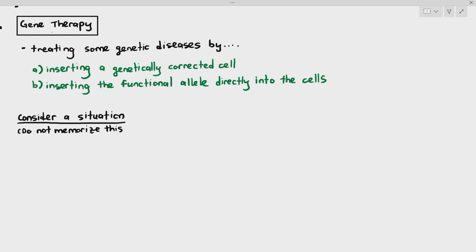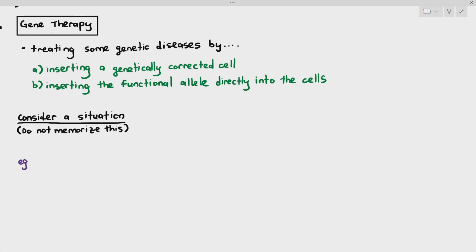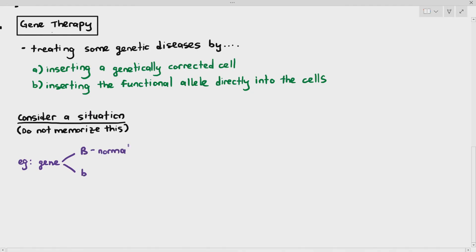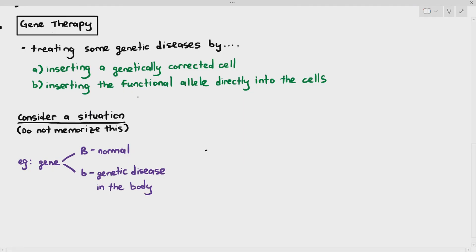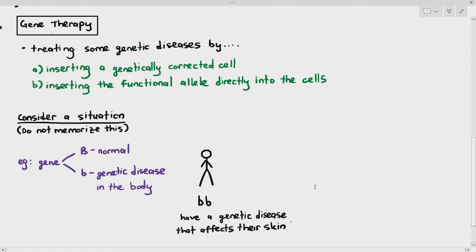Let's look at an example. Let's say there is a gene where the large B allele (dominant) makes the person normal, but the small b allele causes a genetic disease. If the person is homozygous recessive (small b, small b), they will have a genetic disease — let's say it affects their skin, so their skin is not functioning properly.